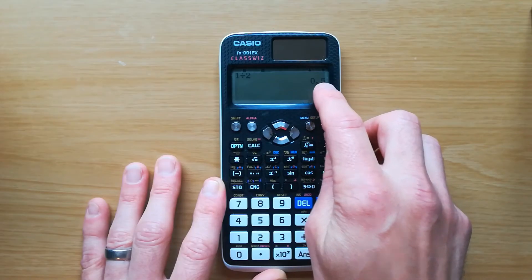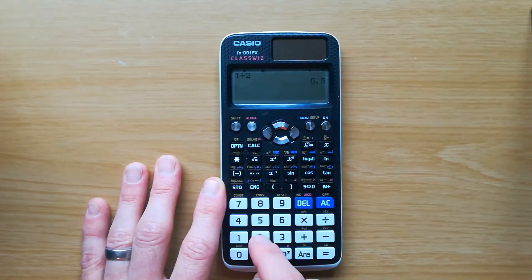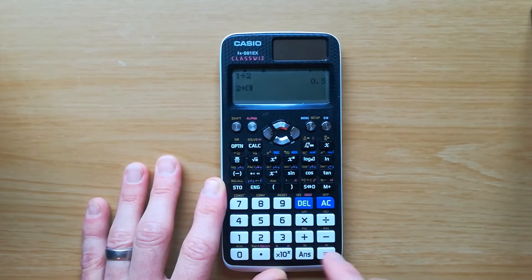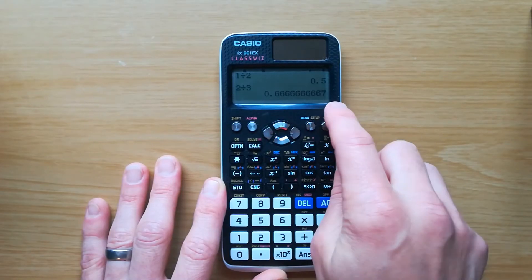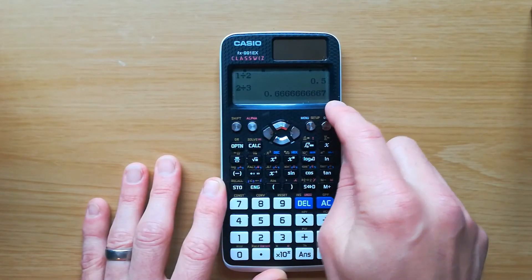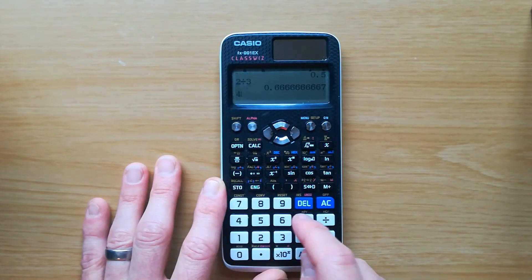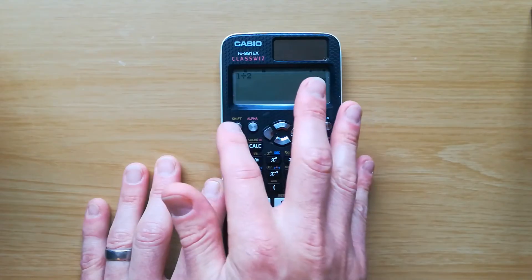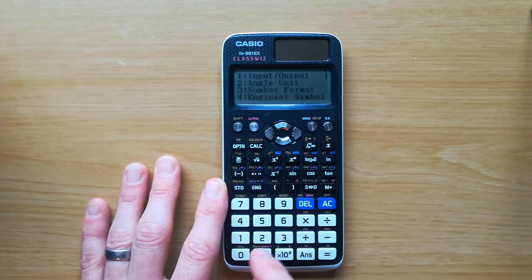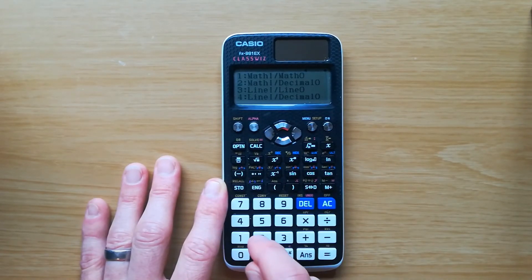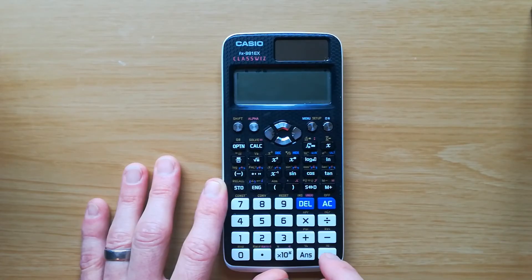And the reason for that is that if I now do another calculation, so three divided by three, I've now got my latest answer at the bottom and it's just gonna scroll the screen. So if I do, I don't know, four times five, twenty.